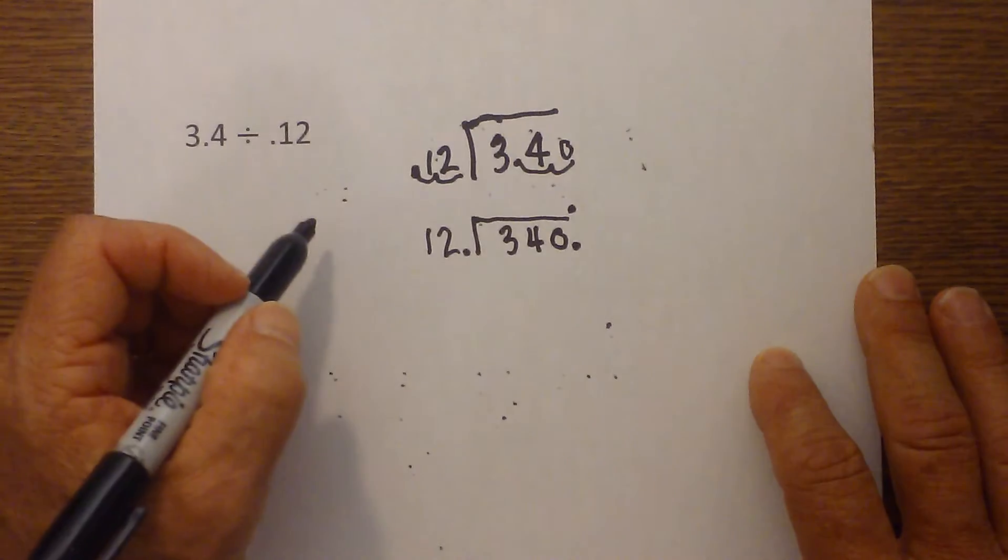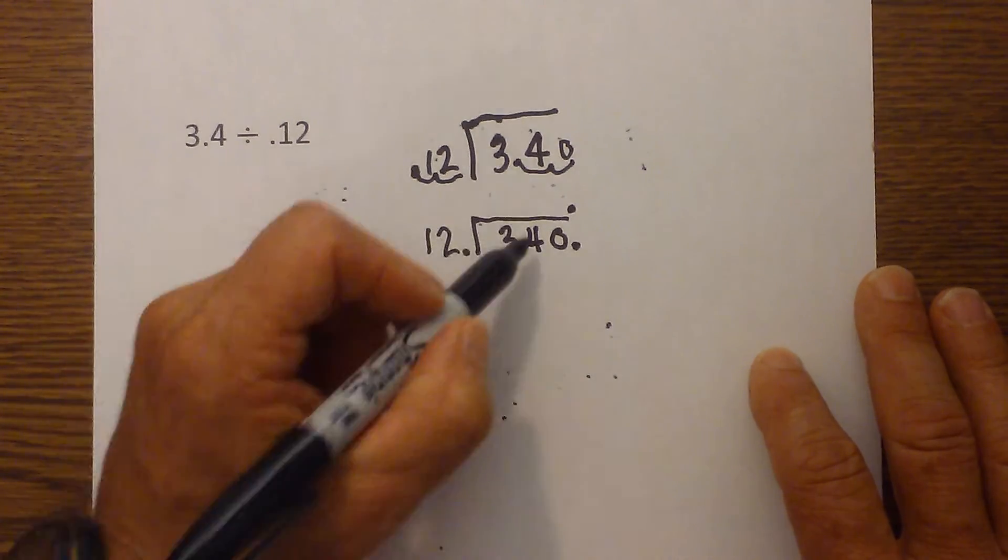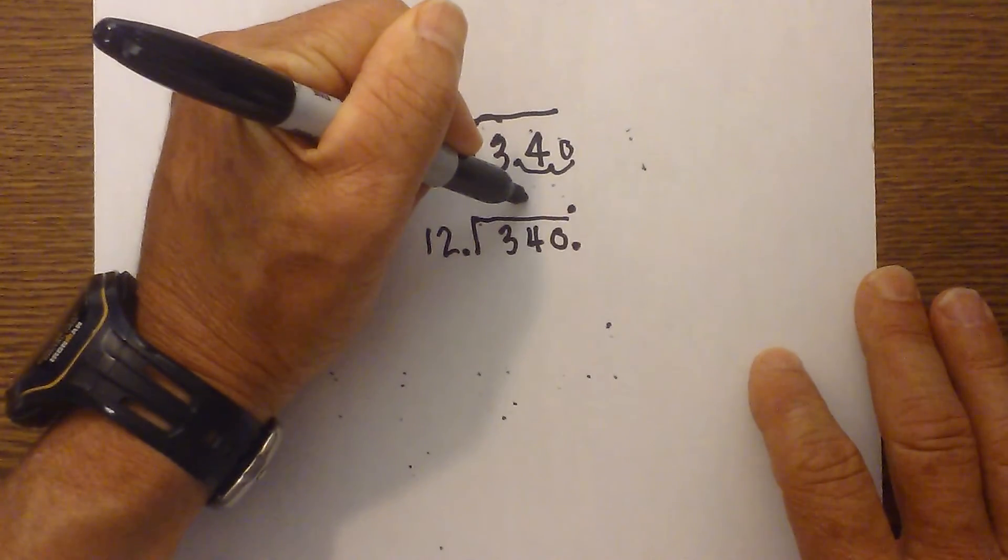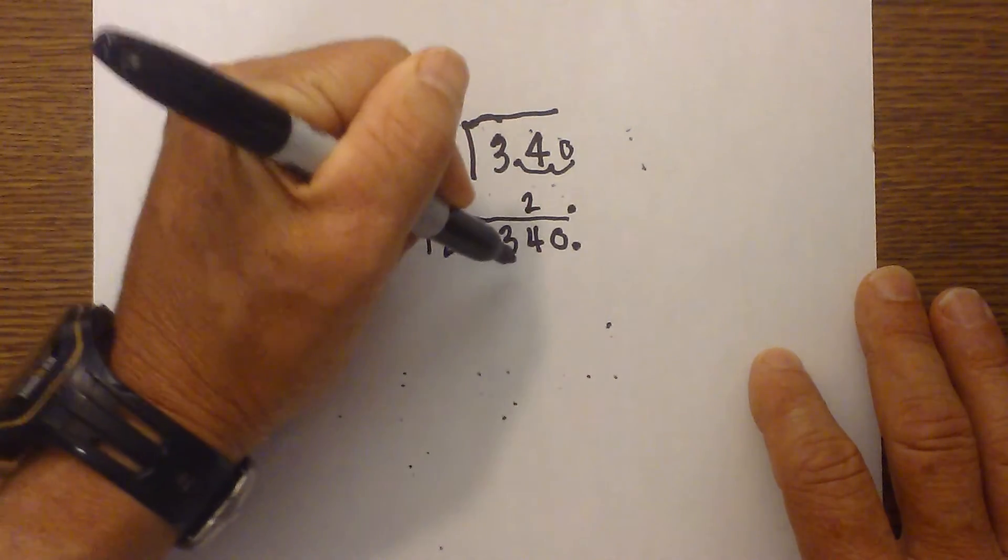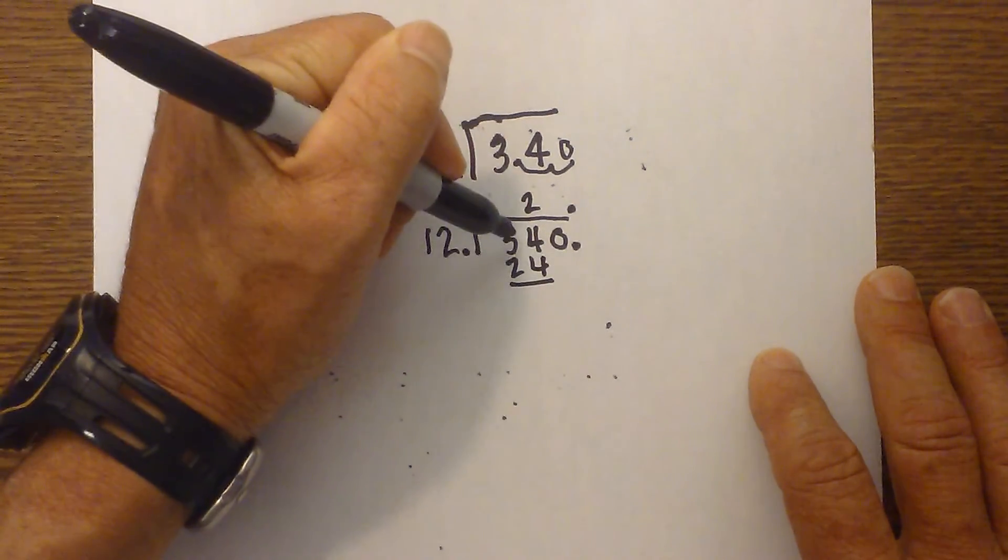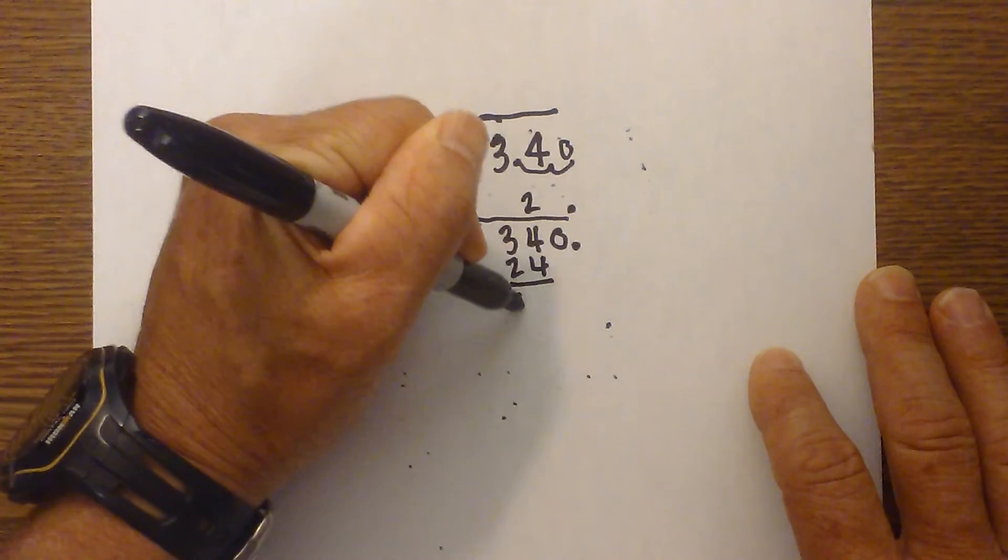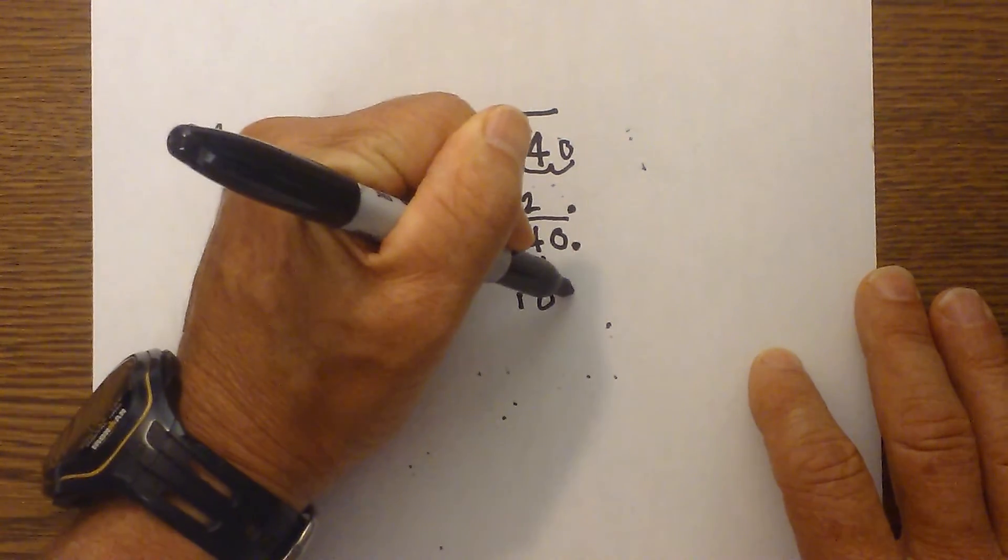And now you just do division. And so 12 will go into 34 two times, and that becomes 24. And so that becomes 10. Bring down the zero.